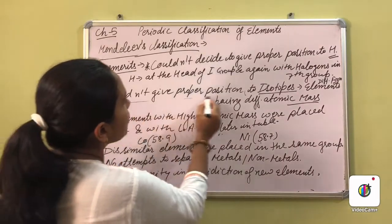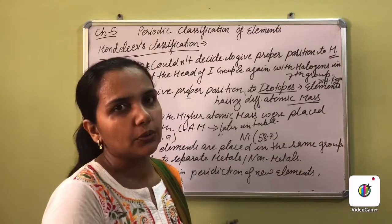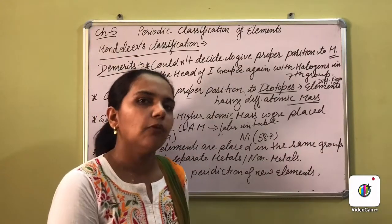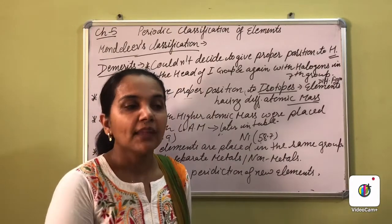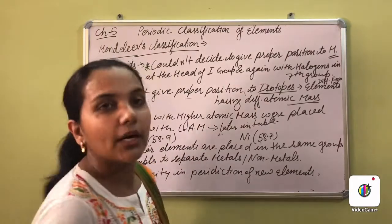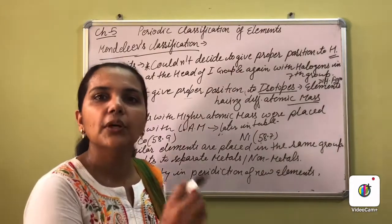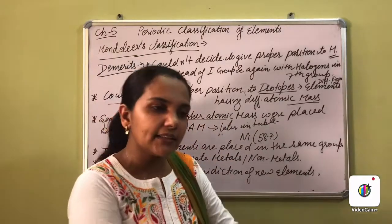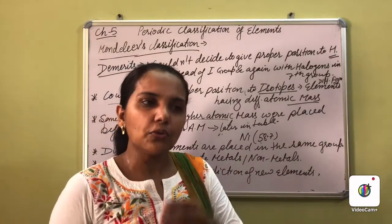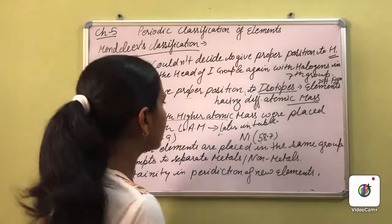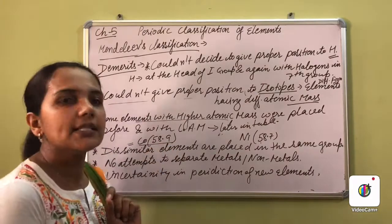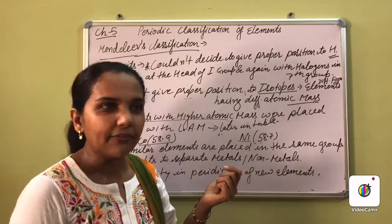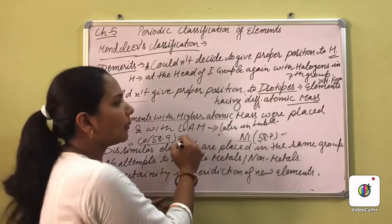Second, he was not able to give proper positions to isotopes. Isotopes are different forms of the same element - when an element exists in different forms, its atomic mass differs, making it impossible to arrange them properly. Third, some elements with higher atomic mass were placed before elements with lower atomic mass. For example, cobalt has an atomic mass of 58.9 and nickel has 58.7, yet cobalt was placed before nickel in the table, violating the atomic mass order.